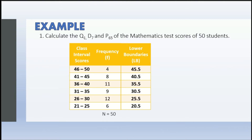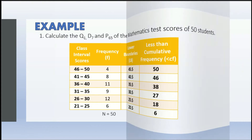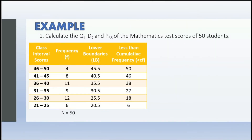21 − 0.5 = 20.5. For the less-than cumulative frequency, it is obtained by adding successively the frequencies of all previous classes including the current class, starting from the lowest to the highest. We begin with 21–25: frequency is 6, so we copy 6. Then 6 + 12 = 18, 18 + 9 = 27, 27 + 11 = 38, 38 + 8 = 46, and 46 + 4 = 50.